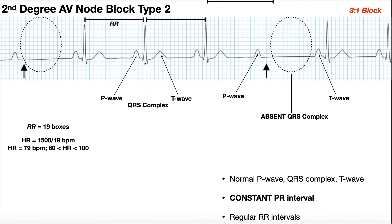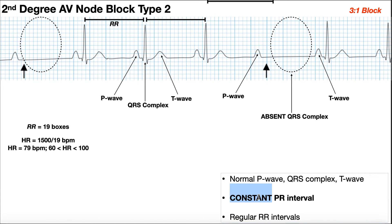Type 1 is sometimes called Wenckebach. For the other second degree AV node block — type 2 — you still have QRS complexes that are dropped, but the PR interval is constant. And actually, sometimes it's not even extended. The key thing with a type 2 AV node block is everything looks normal: P wave, QRS, T wave — but then QRS complexes are dropped. You look at those PR intervals and they look normal; they're not changing in size. Because they're constant and not increasing in length, and you have a dropped QRS complex, it's type 2.